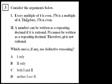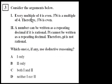Consider the arguments below. Argument 1: every multiple of 4 is even; 376 is a multiple of 4; therefore, 376 is even. Which ones, if any, use deductive reasoning? Statement 1 is deductive reasoning because you know every multiple of 4 is even — so pick any multiple of 4 and it's going to be even. 376 is a multiple of 4, therefore it has to be even. This is correct logic, so statement 1 is definitely deductive reasoning.